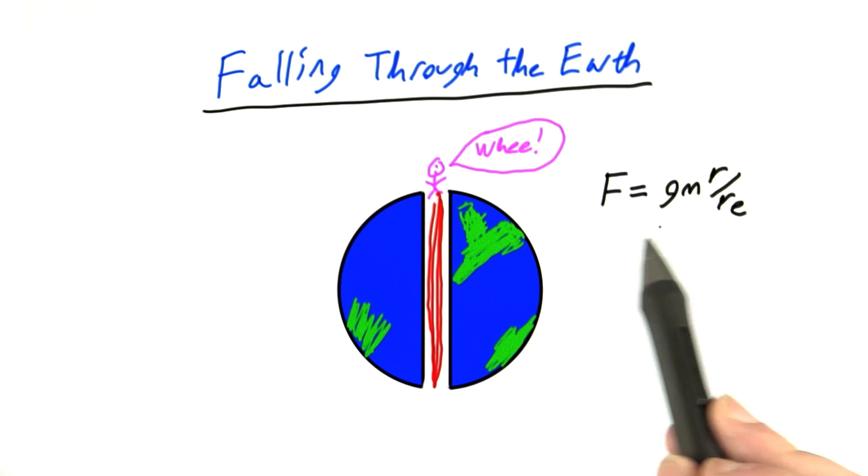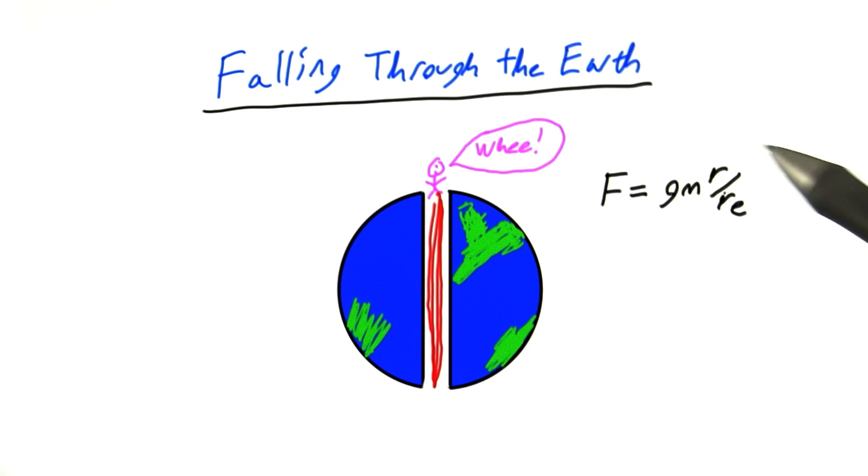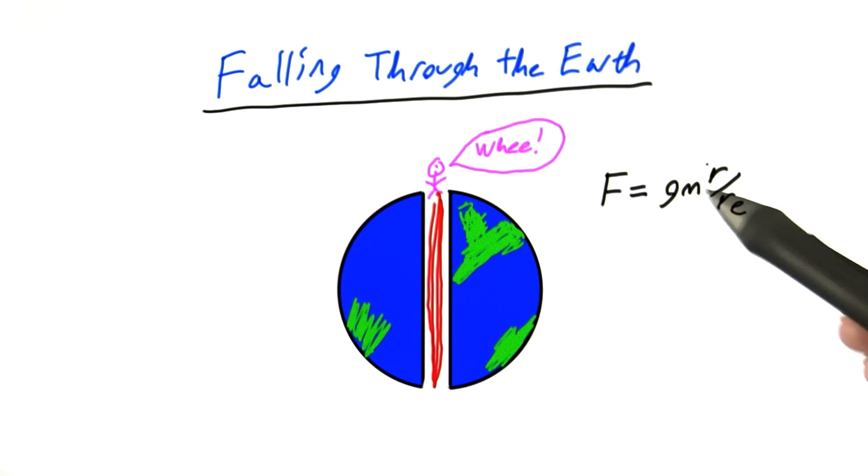It turns out that the force of gravity within the Earth's surface is equal to little g times your mass divided by the radius of the Earth, and then times your current radius - so your distance away from the center of the Earth, which I'm calling r here.